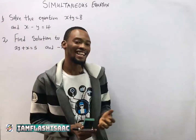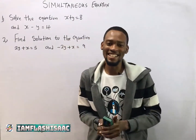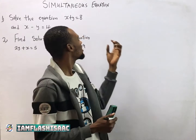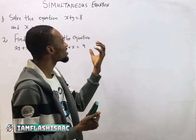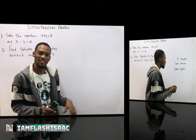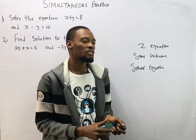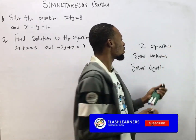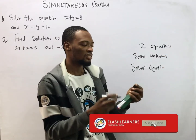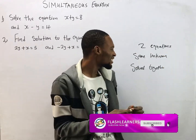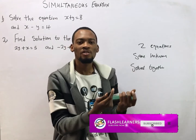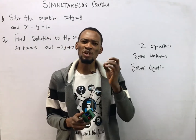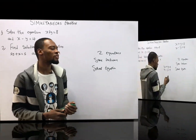Hello guys, I am Flash Isaac and today I'll be taking you through simultaneous equations. Simultaneous equation means two equations with the same unknown and they are solved together. This is what makes a simultaneous equation.